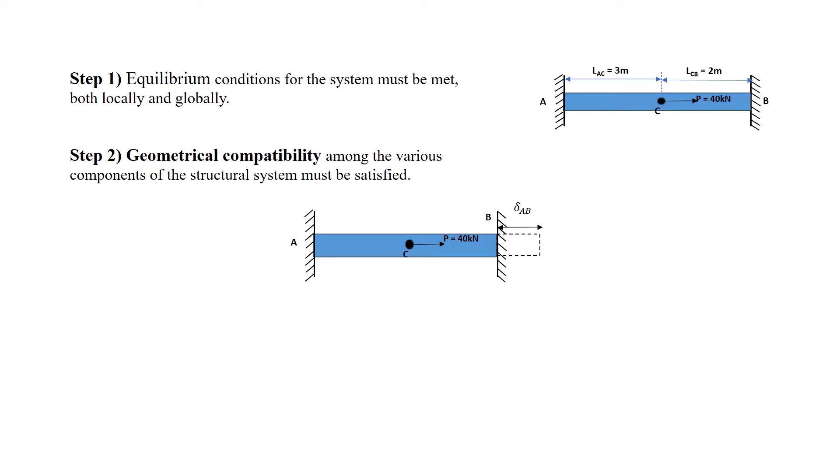For example, here the overall length change is zero. Therefore, the compatibility condition for this rod is delta A plus delta B equals zero.